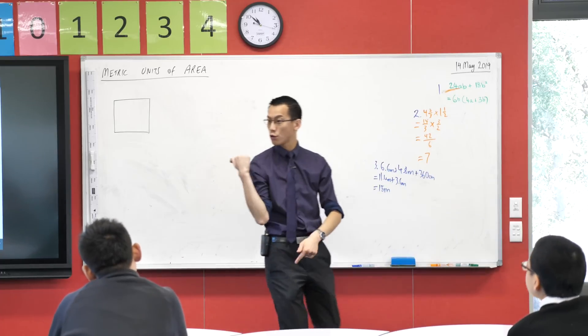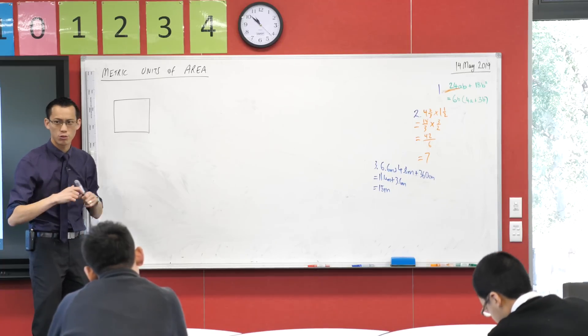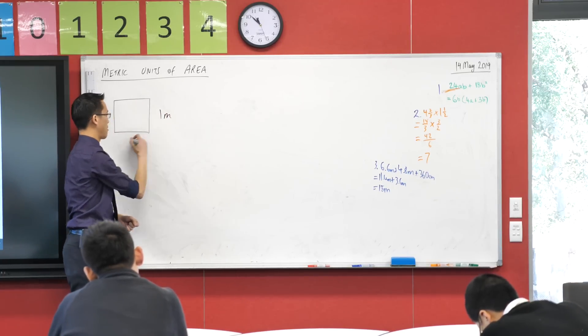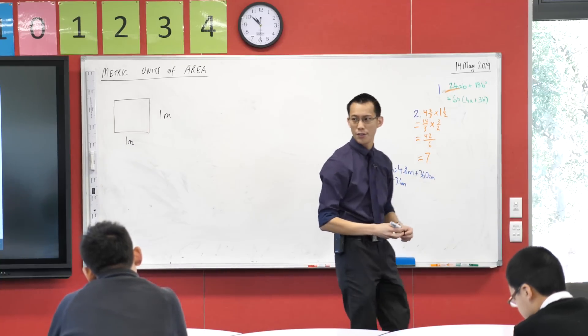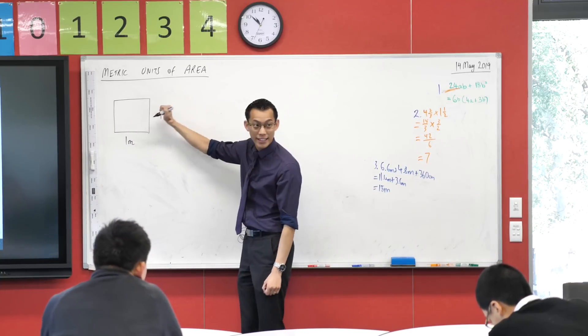So for example, if you could label both the vertical and the horizontal lengths, let's for example, label them one metre. How do we work out the area of this shape? Go ahead, Adush. Very good. We're multiplying these two together.